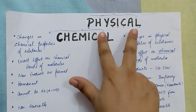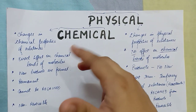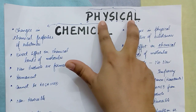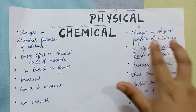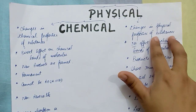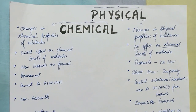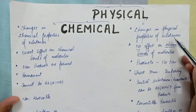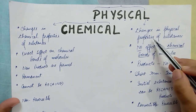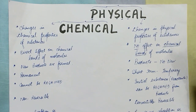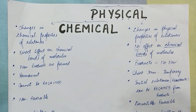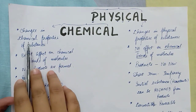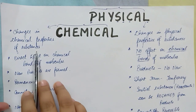As the words suggest: physical and chemical — what can we derive from these two words? Physical tells us all those changes in which the physical properties of the substances are changed. Physical properties include, for example, state, color, volume, and density. On the other hand, chemical changes are those in which the chemical properties of the substances are changed.